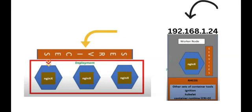Now let's consider this scenario. Let's say that my application is a web application — a customer-facing application and an e-commerce one, for example Amazon. Would the users use the IP or node information to log into the web app? Apparently no, hence the need to create a route.